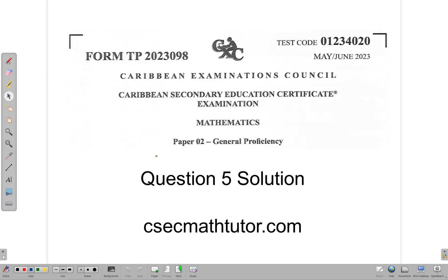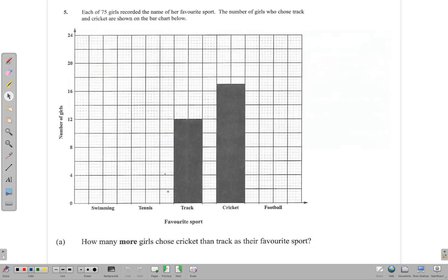Hello and welcome. Thank you for joining as we go through Question 5 of the May-June 2023 CSEC Mathematics Paper 2. The question begins: Each of 75 girls recorded the name of their favorite sport.